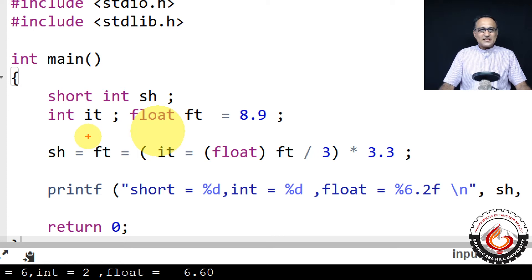Let's take another case of explicit type casting. So I have short int sh, I have integer it, float ft is equal to 8.9.